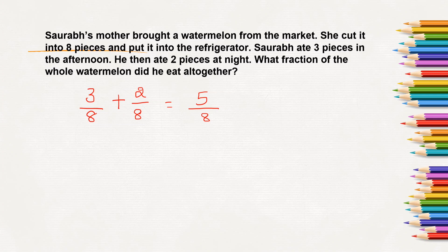And how many pieces are left? Yes, 3 pieces are left. 1 whole watermelon means 8 by 8. He has eaten 5 pieces out of 8 pieces. That means, still 3 more pieces are left out of 1 whole watermelon.